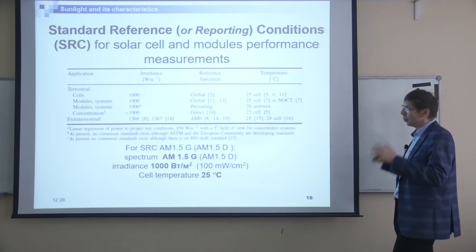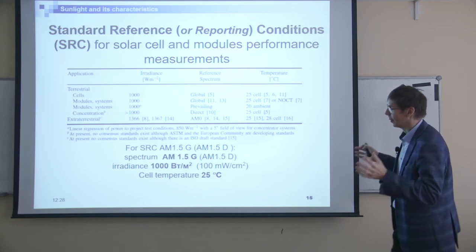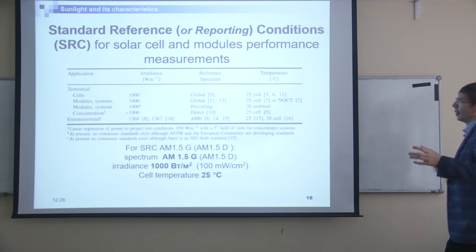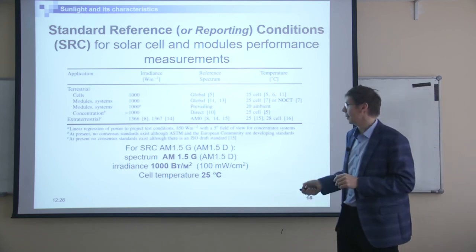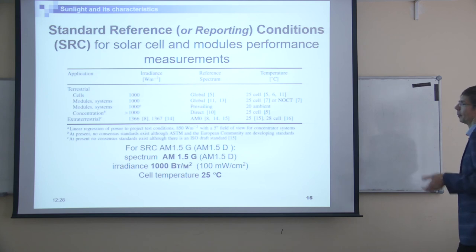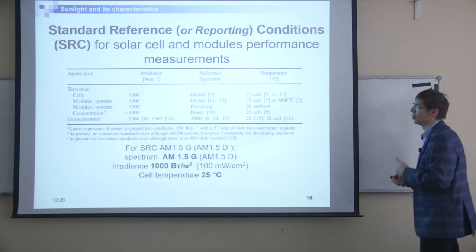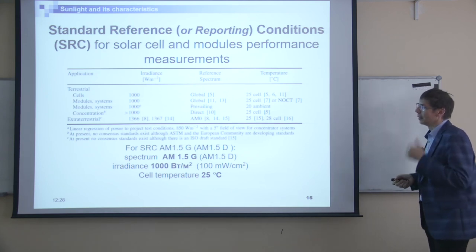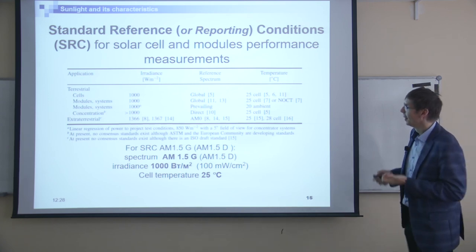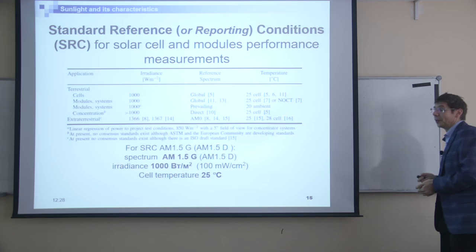Finally, here is a conclusion summarizing the standard conditions: the spectrum is AM1.5G, the intensity is 1 kW/m², and the temperature is 25 degrees Celsius.